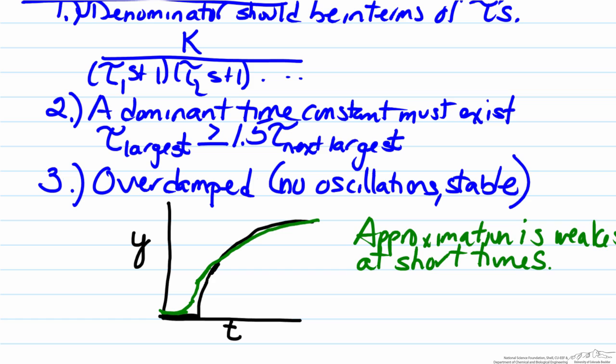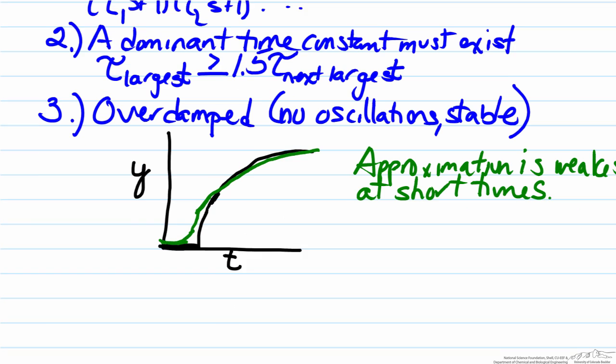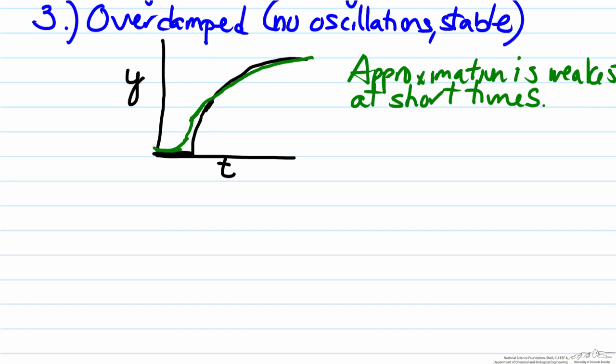Now that we have looked at the requirements in order to use the Skogestad method, let's actually describe the Skogestad method in terms of how it is able to approximate higher order transfer functions. So the way it does it is remember the fact that what we're trying to do is get a FOPDT. So FOPDT is k e to the negative theta s divided by tau s plus one, where k is the steady state gain, the theta is the dead time, and the tau is the time constant. So here the Skogestad method needs to find three parameters, k, theta, and tau.